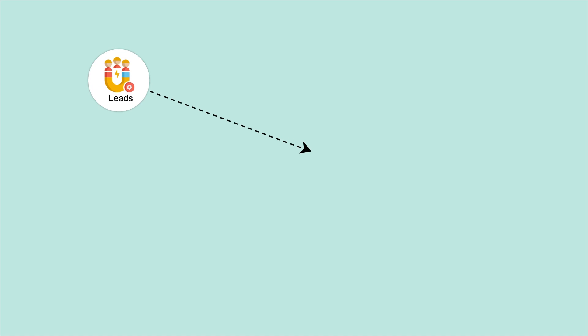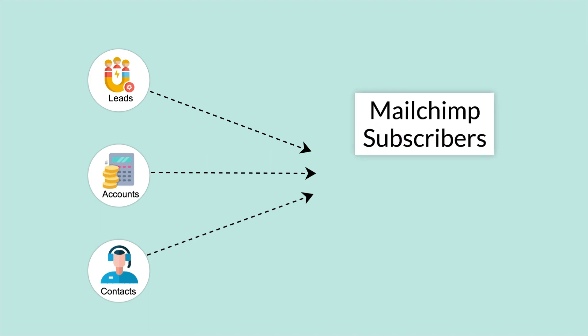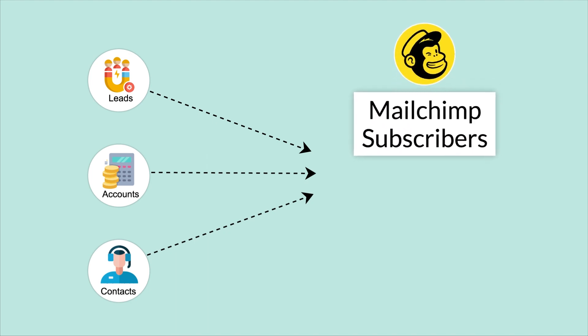With this integration, it is easy to sync Zoho leads, contacts, and accounts as MailChimp subscribers and vice versa. So you can easily handle all of your customer records in both locations. The subscribers of MailChimp will be synced as Zoho contacts, leads, or accounts based on the configuration settings.